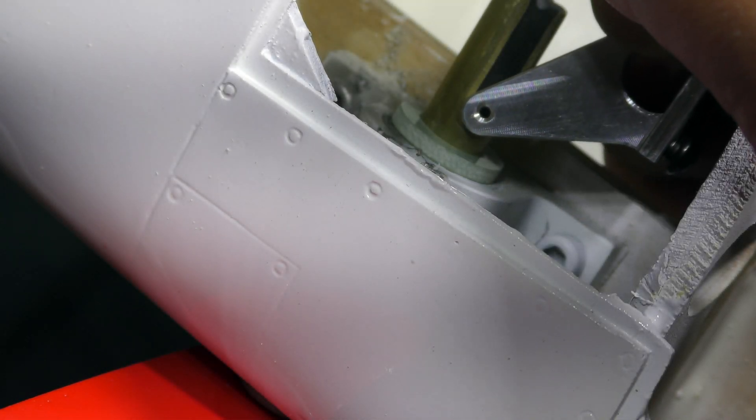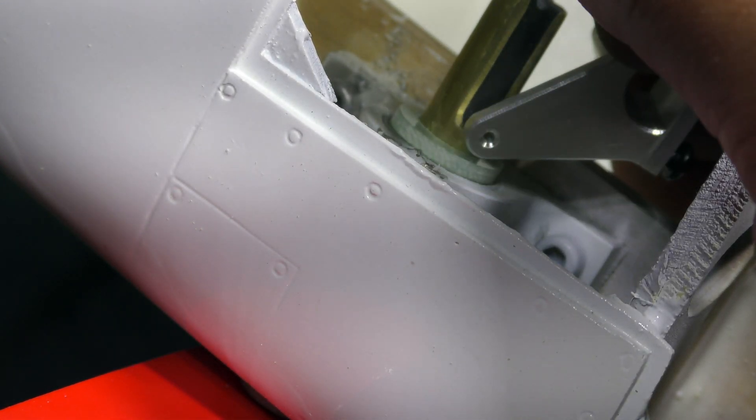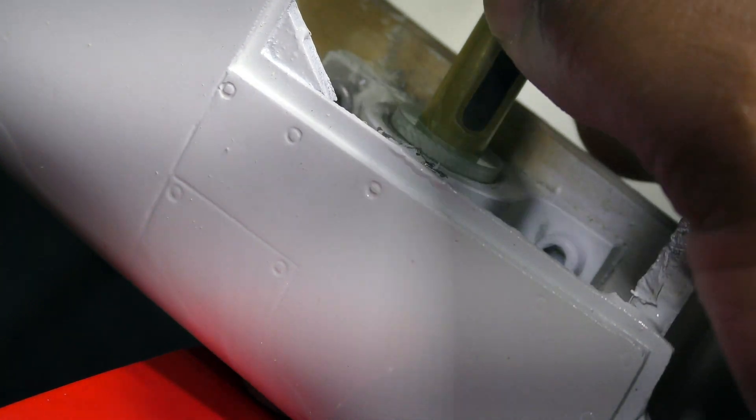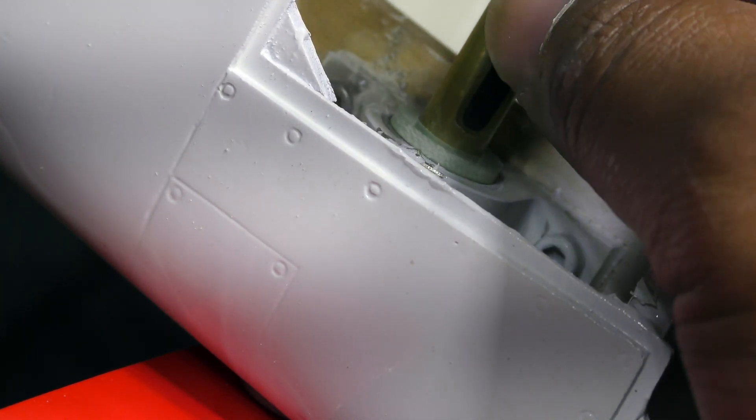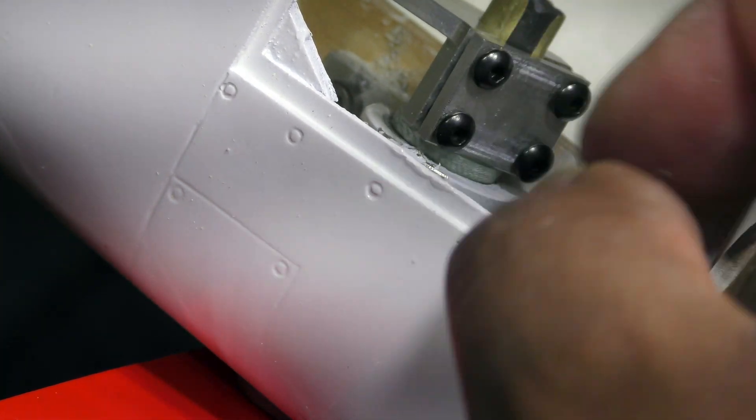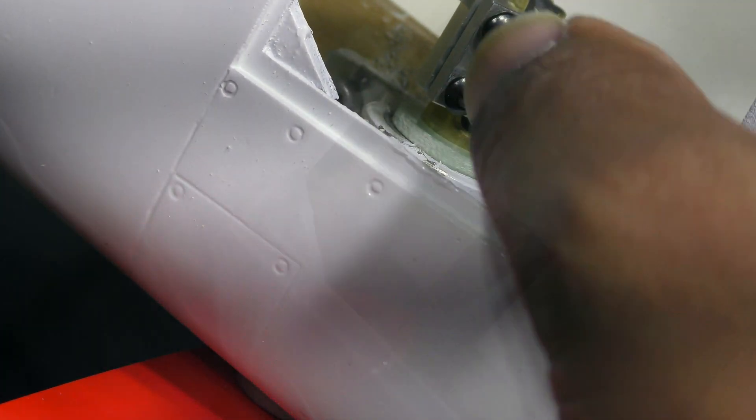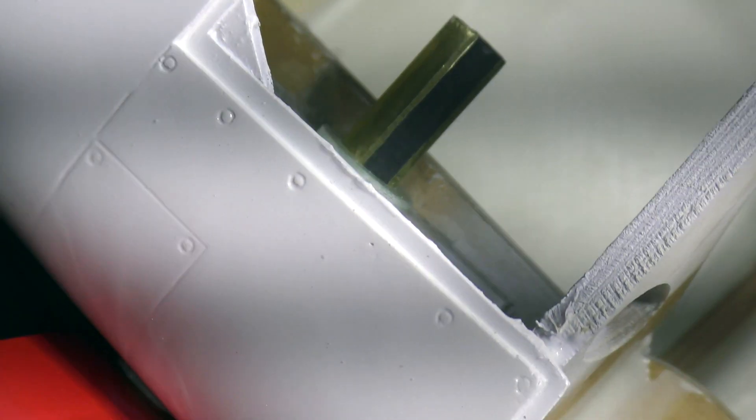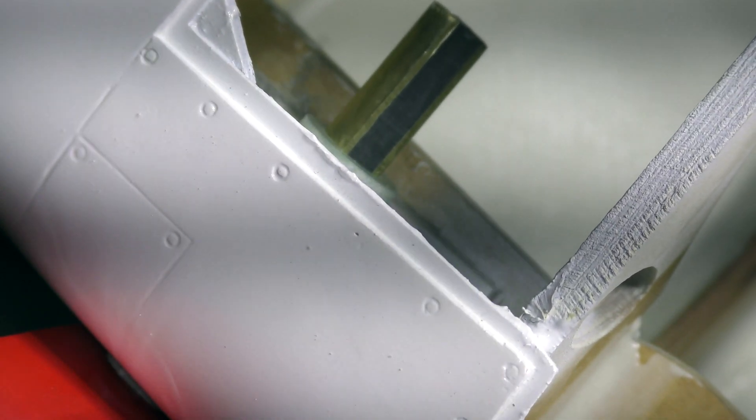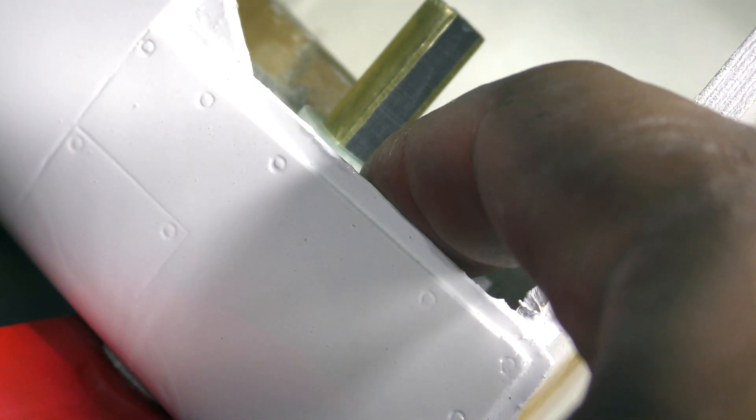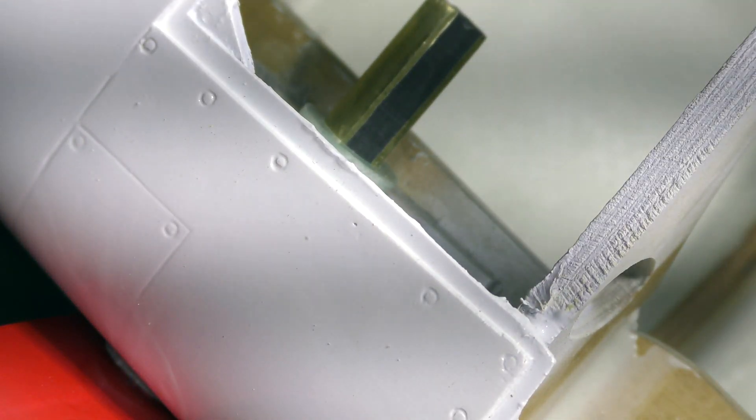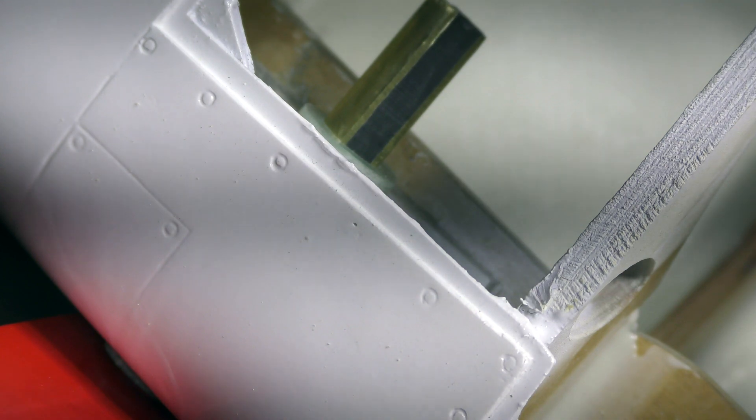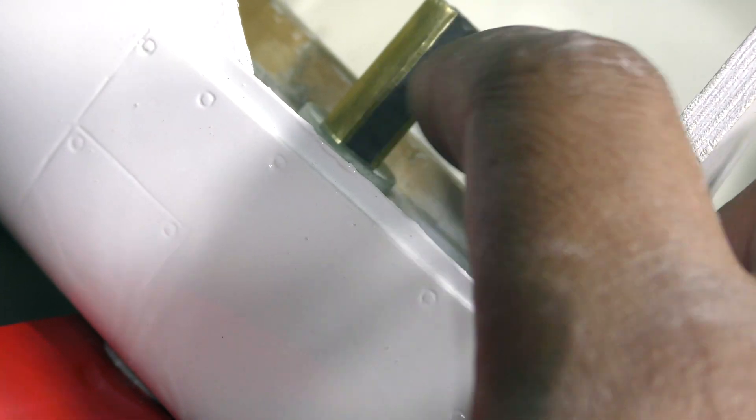I'm just going to grind this additional surface away so that when this guy gets mounted on here, it can go all the way to the end and the flat spot will not have to grab any round surface. Now you can see I've ground it all the way to just underneath the washer, and so now the flat spot on the arm will be able to go all the way and lock this in place.